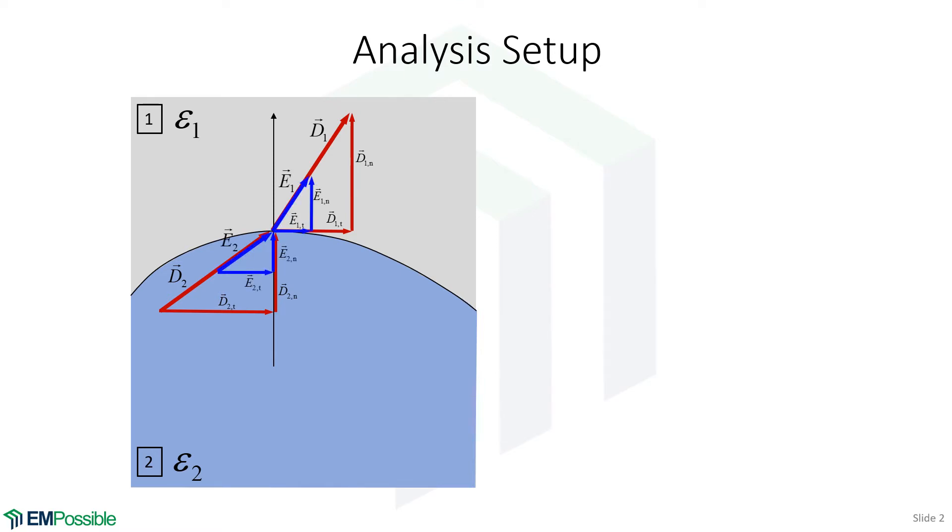We can do a similar thing with the electric field intensity. So the overall electric field intensity is E1 and E2. And each of those is divided into its normal and tangential components.